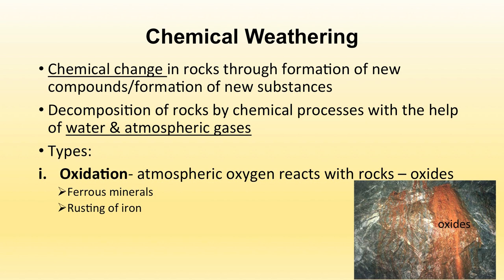There are different types of chemical weathering. In oxidation, atmospheric oxygen reacts with rocks and forms oxides. This is mainly found in ferrous minerals where rusting of iron takes place. In the picture you can see red-colored rocks — a rock rich in iron coming in contact with atmospheric oxygen and water, changing the iron content into oxides. This area becomes weaker and then disintegration of rocks takes place.